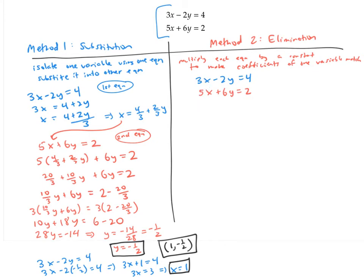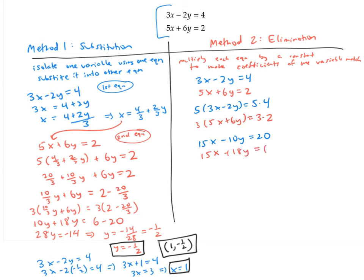So for the first equation, I'm going to multiply both sides by five, and for the second equation, multiply both sides by three. That gives me, for the first equation, 15x minus 10y equals 20, and for the second equation, 15x plus 18y equals six.